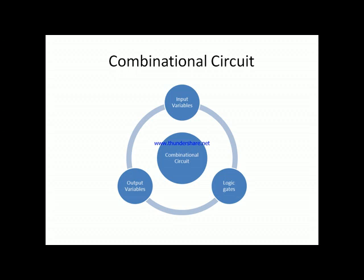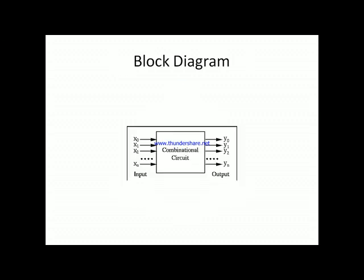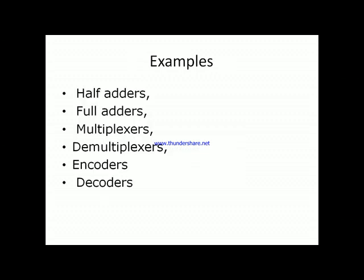Looking at the block diagram of a combinational circuit, we find n input variables and m output variables, making it an n×m combinational circuit. There are many different kinds of combinational circuits used in the digital world. Examples include half adders, full adders, multiplexers, demultiplexers, encoders, and decoders.